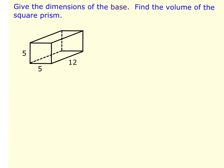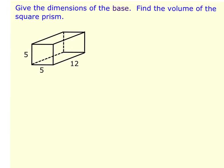So first we want to recognize that this is a square prism, because we can see that the two bases are squares. And so the dimensions of the square would be 5 and 5, and then the 12 would be the height of the prism.